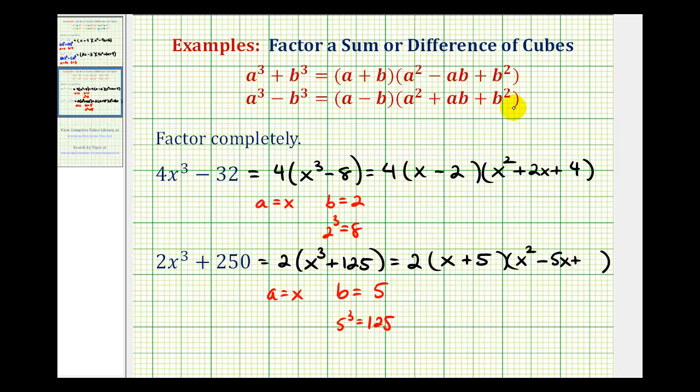Plus b². And if b is equal to five, b² would be 5², or twenty-five. And again, this trinomial is never going to factor. So now we have factored the given polynomial completely.